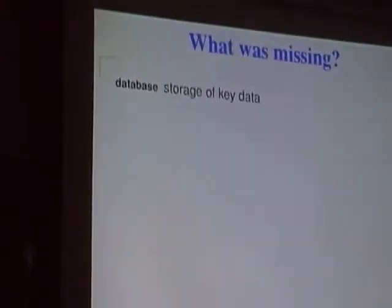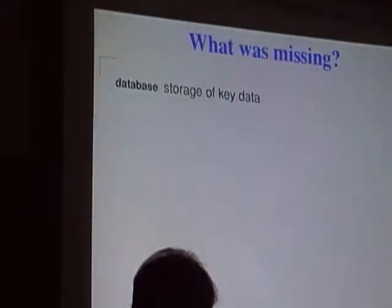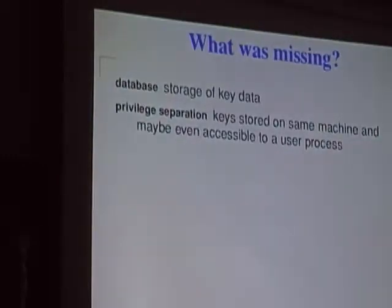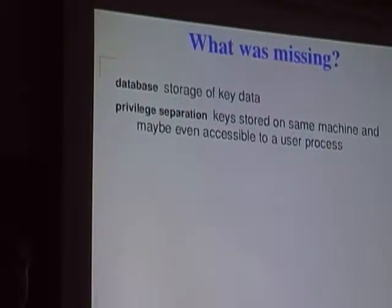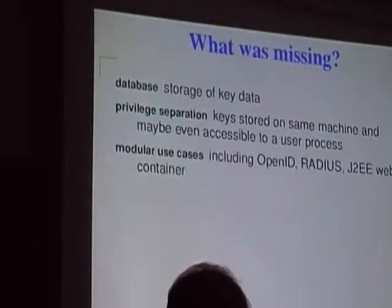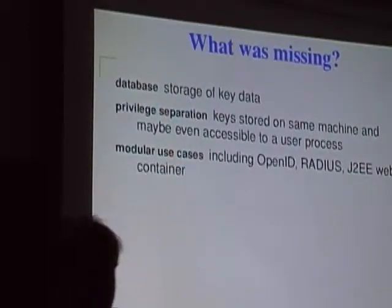What was missing from these solutions? The database — many are based on flat files with very simple data management. Privilege separation: in a genuinely secure environment you have a hardware security module with key data on a separate network device behind a firewall, with only limited traffic able to interact with it. Having a PAM module on every Unix box, with a copy of secrets on every box on the network, is less than ideal.